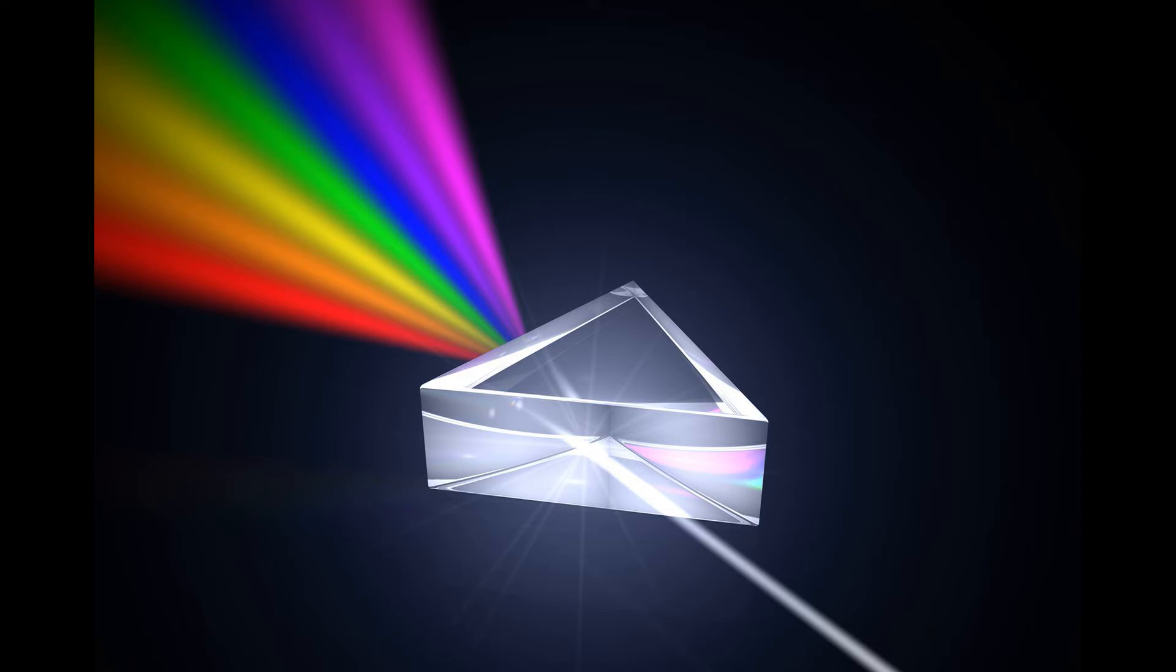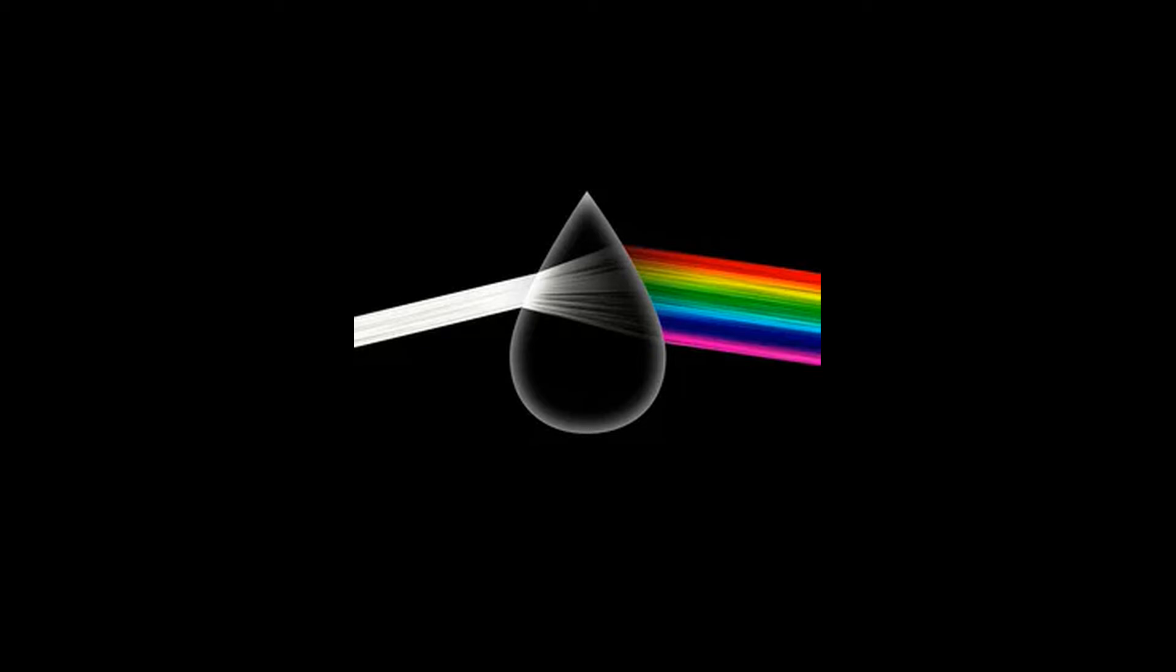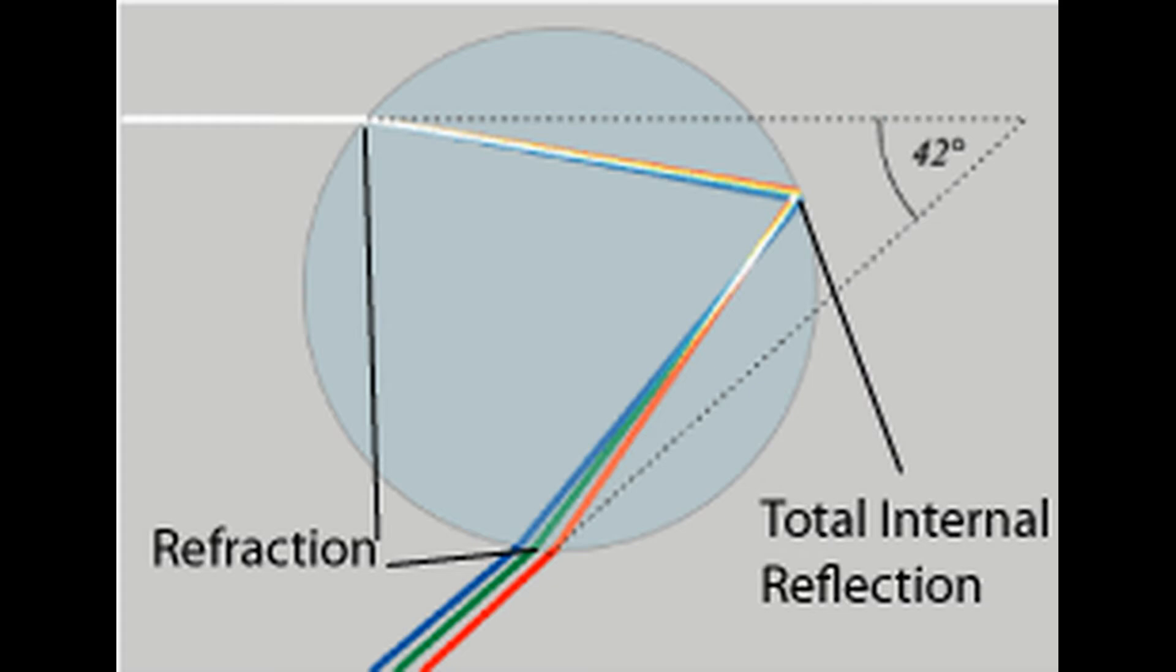So, you might be wondering that the white light must also pass through the water droplet, right? But this is not the case in the formation of rainbows. This happens because of a phenomenon called total internal reflection.